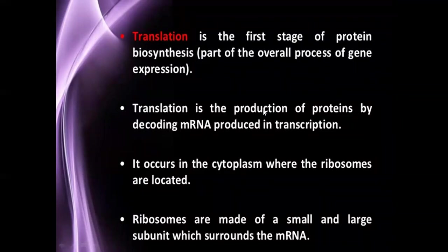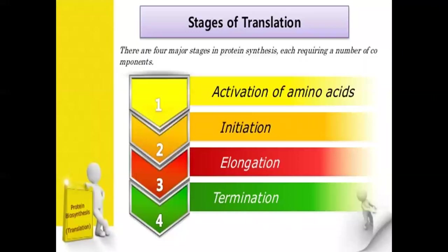Generally we have two ribosomal subunits — a smaller subunit and a larger subunit — and these two subunits are involved in the process of protein synthesis. In the translation process there are four important stages: first, activation of amino acids; second, initiation of protein synthesis; third, elongation of protein synthesis; and fourth, termination of protein synthesis.